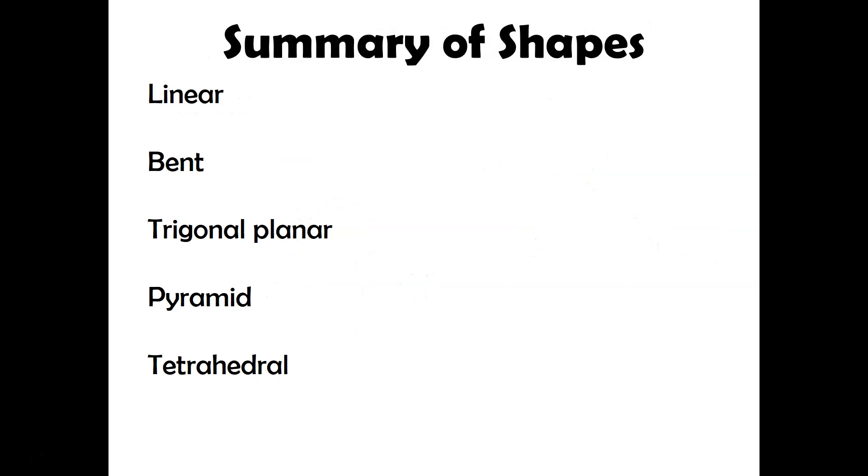So here's a real quick summary of shapes. So with linear, we said in order for it to be linear, there has to be no unshared pairs on the central atom. For bent, you absolutely have to have those unshared pairs or else it won't be in the bent shape. Right. There'll be if there's no unshared pair, there'll be nothing pushing this downwards. You've got to have them there because remember, it's repulsion theory.